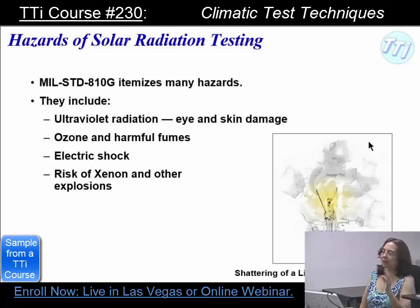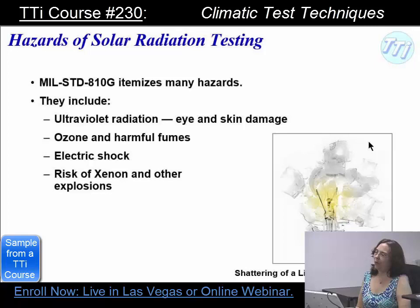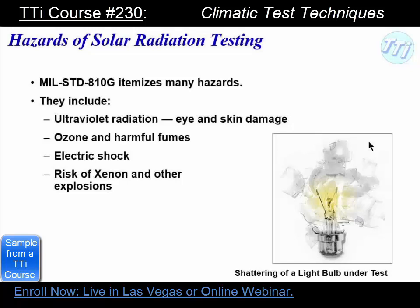You can also get sunburned inside the chamber. My best example of what not to do: he's balding and went into the solar radiation chamber to adjust something. It's a very large chamber, and he burned the top of his ears, the top of his head, the tip of his nose, and his arms. To overcome this problem, he bought a pile of straw hats with wide brims that he has outside the chamber, so if somebody has to go in they can put one on. You need to wear specialized sunglasses.